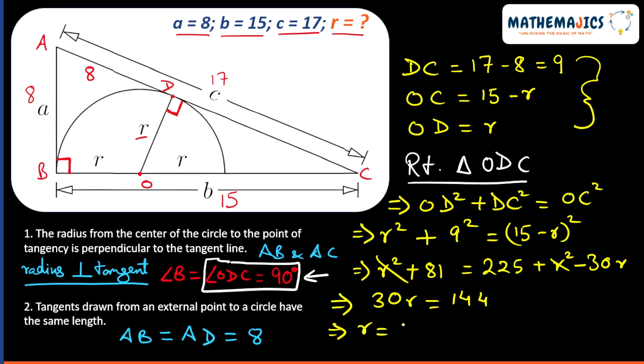Solving this further, we will get 144 upon 30, which is 4.8. That means the radius of this semicircle will be 4.8. This will be our final answer.